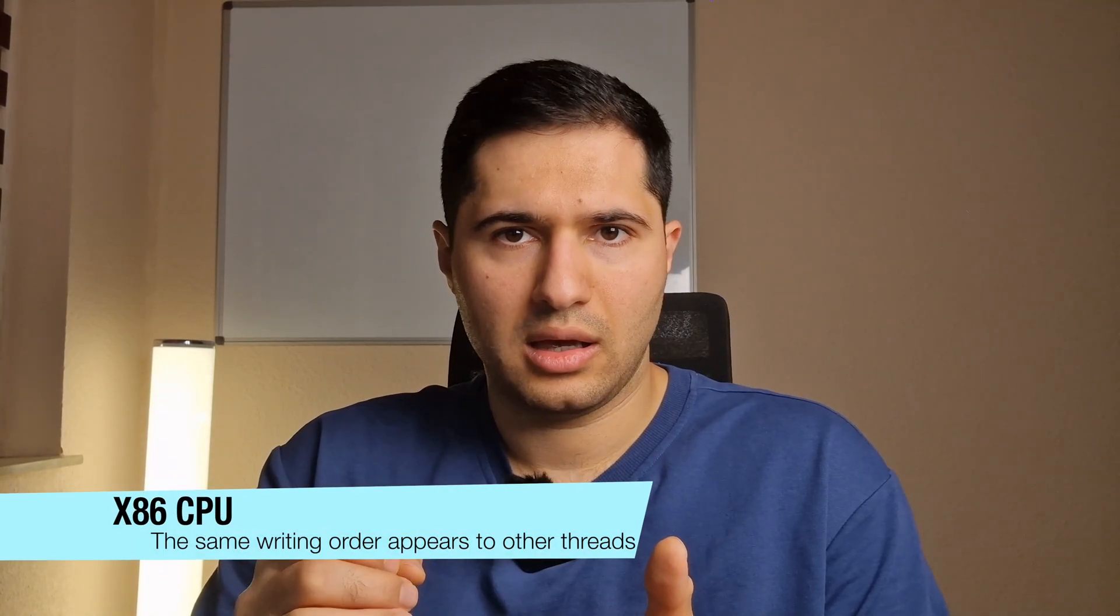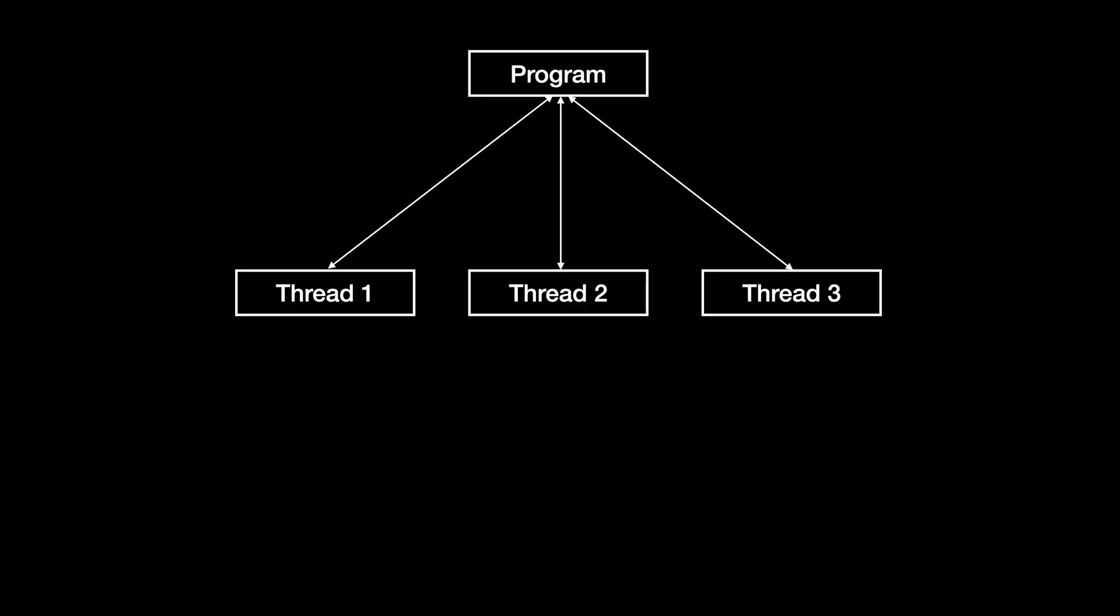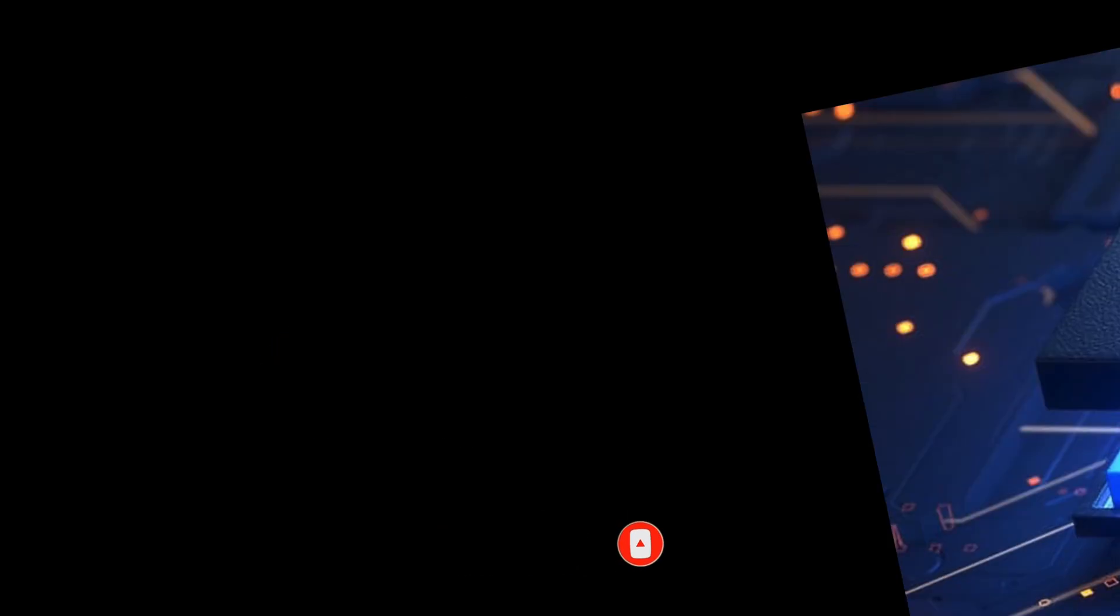It guarantees that writes from a single thread appear in order to all other threads. So if a thread does x equals one and then y equals two, other threads will always see that x is written before y.